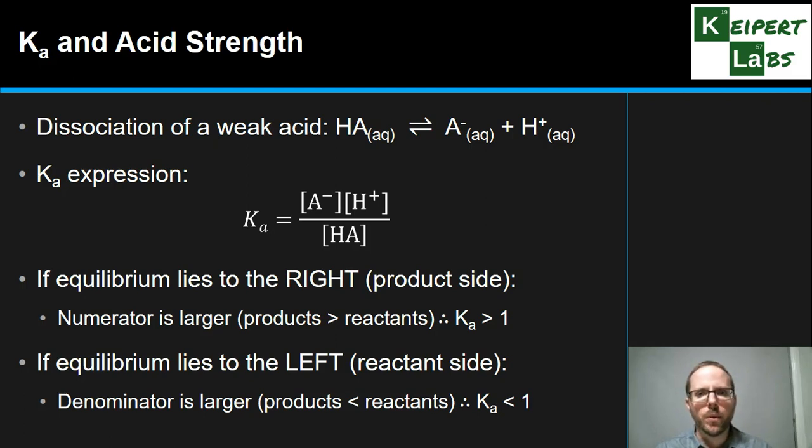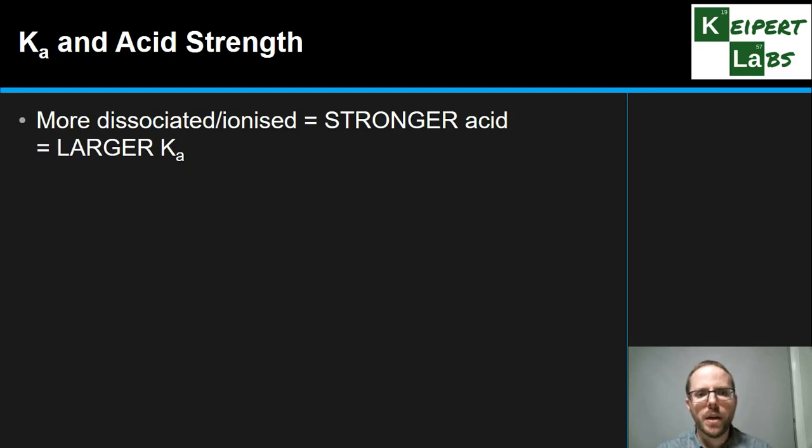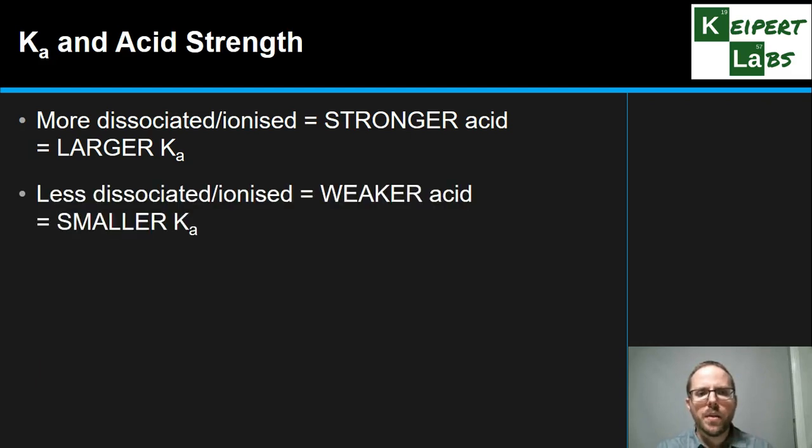And what, therefore, the strength of the acid is like. The more dissociated or ionized the acid is, the stronger it is, the larger its Ka will be. The less dissociated or ionized it is, the weaker it is, therefore the smaller its Ka value in proportion.